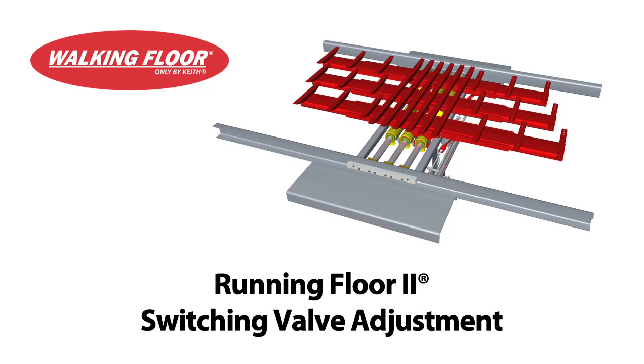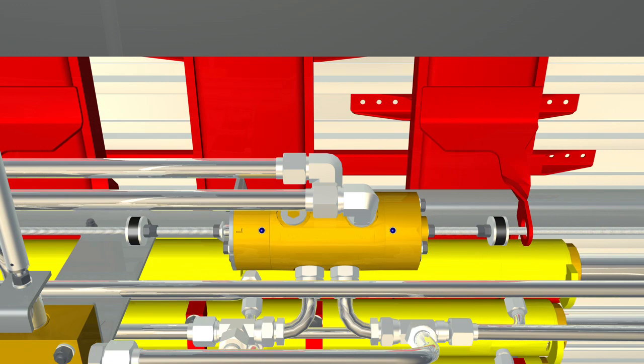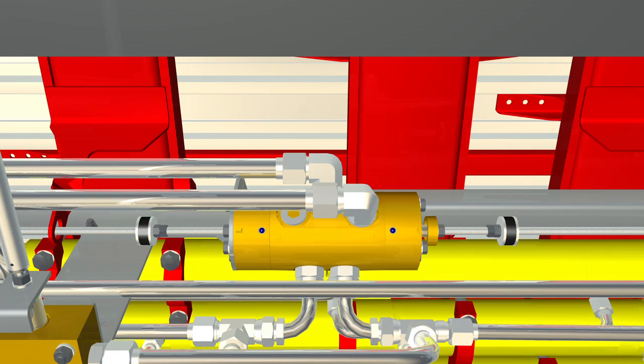Troubleshooting instructions for adjusting a switching valve on the Keith Running Floor 2 drive. Most switching valves are incorrectly replaced because they are out of adjustment. Going through these troubleshooting steps will determine if your switching valve actually needs to be replaced or simply adjusted.